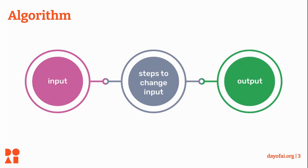The three main parts of an algorithm are input, steps to change the input, and then output.